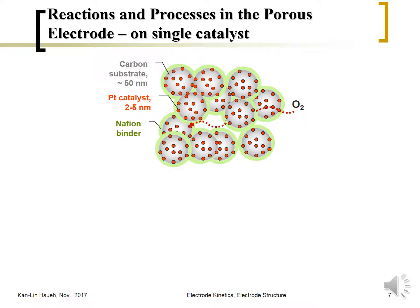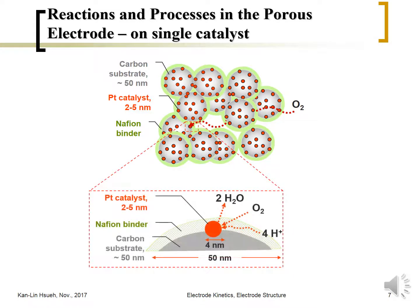Looking in more detail at a single catalyst particle: oxygen diffuses into the catalyst layer, the proton migrates through the liquid phase, and the electron is conducted through the carbon powder onto the catalyst surface, where oxygen is reduced into water. The proton migration in water involves hydrogen bonding — typically one proton is associated with about 2.5 water molecules. That is why protons in the PEM fuel cell need water in order to migrate and transport from the membrane to the catalyst layer.